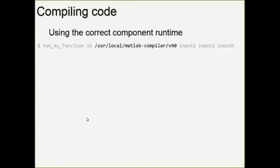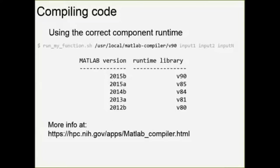The MATLAB Component Runtime (MCR) is always going to be the first argument when you use the shell script generated by MCC. On our system it's located at /usr/local/MATLAB-compiler/ and then there are many versions. You have to know what version of MATLAB you compiled your code with and match it to the correct MCR — they are not backward compatible, and mixing and matching gives you a very unhelpful error. You don't have to memorize this; just log on to the HPC website, where there's a table showing which Component Runtime matches which MATLAB version.